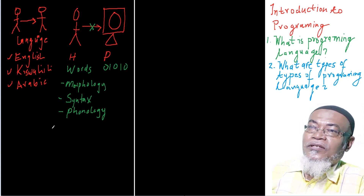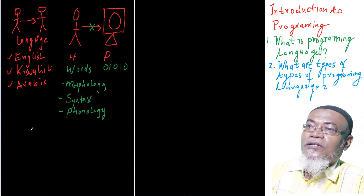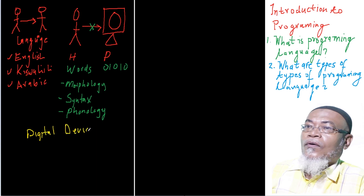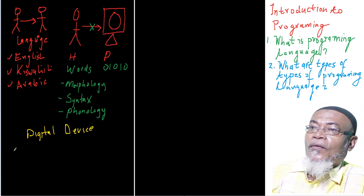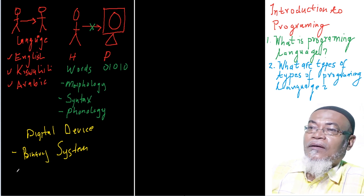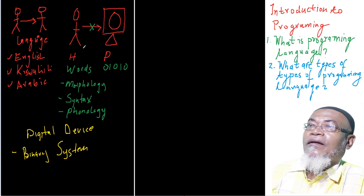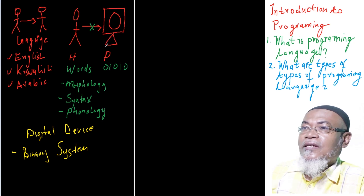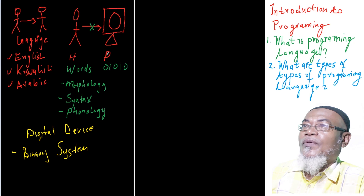When we are talking about a digital device, we have seen that digital devices understand what you call binary systems. When we are talking about binary systems, we are talking about zeros and ones. So we cannot communicate directly with a computer. What happens is that earlier scientists sat down and came up with a way of how human beings can communicate with a particular device.